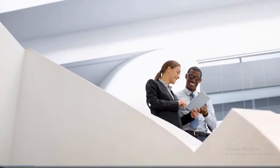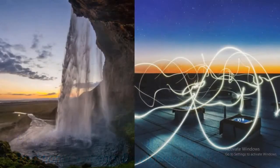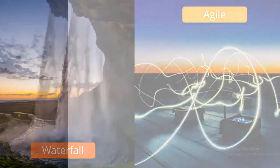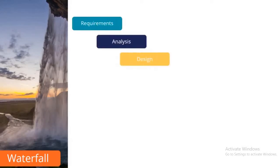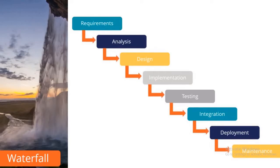Let's dive into two main types of software development methodology your customers may be familiar with: Waterfall and Agile. Waterfall is a linear approach where development flows downwards through several phases like requirements, analysis, design, implementation, testing, integration, deployment, and maintenance. Typically, each stage needs to finish before another can begin.